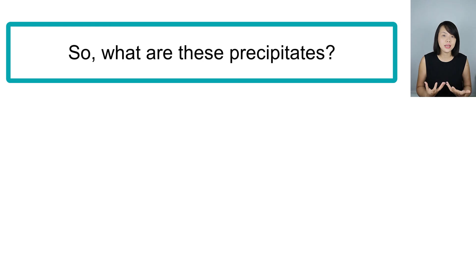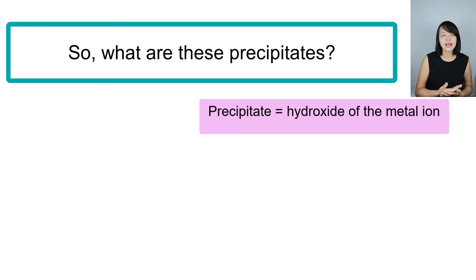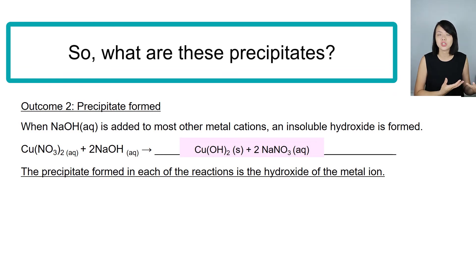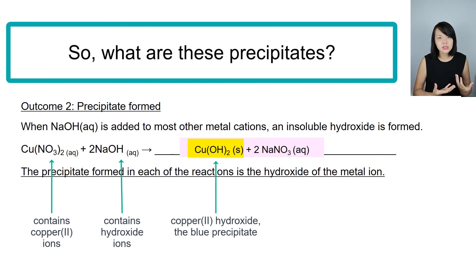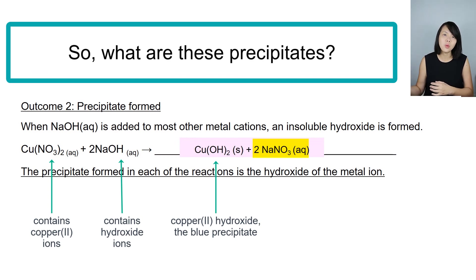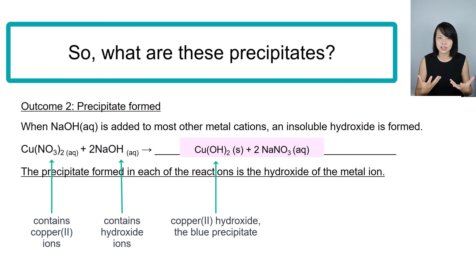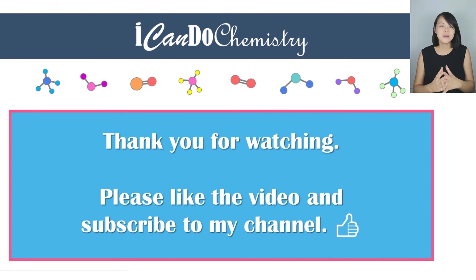The precipitates formed in each of these reactions are actually the hydroxide of the metal ion. For example, if the salt solution is copper nitrate and we add sodium hydroxide, copper hydroxide will form. Copper hydroxide is an insoluble salt, while the side product sodium nitrate is soluble in water. So the light blue precipitate we observe is copper hydroxide.